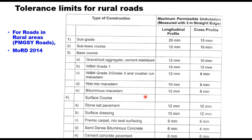The tolerance limits for rural roads are given for different types of layers. For subgrade, the maximum permissible undulations when measured with a 3 meter straight edge should not be more than 20 mm in case of longitudinal profile and 15 mm in case of cross profile. For subbase course it is 12 mm and 10 mm respectively. For different types of base courses these values are given in MORD specifications. For surface course — including stone set pavement, surface dressing, premixed carpet, mixed seal surfacing, semi-dense bituminous concrete, or cement concrete pavement — the maximum permissible undulations measured with a 3 meter straight edge are specified.